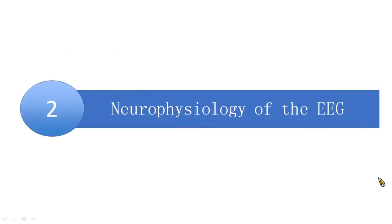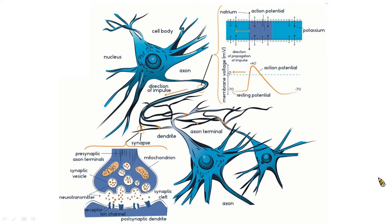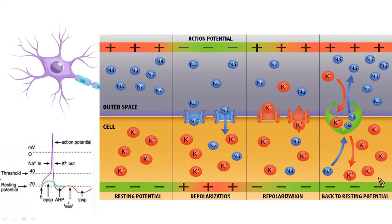The second topic is the neurophysiology of the EEG. Before talking about the neurophysiology of the EEG, we have to understand the structure of a neuron. A neuron includes the dendrite, cell body, and axon. The neuron passes the message from the dendrite to the cell body and to the axon, then through the synapse passes the message to the other neuron.